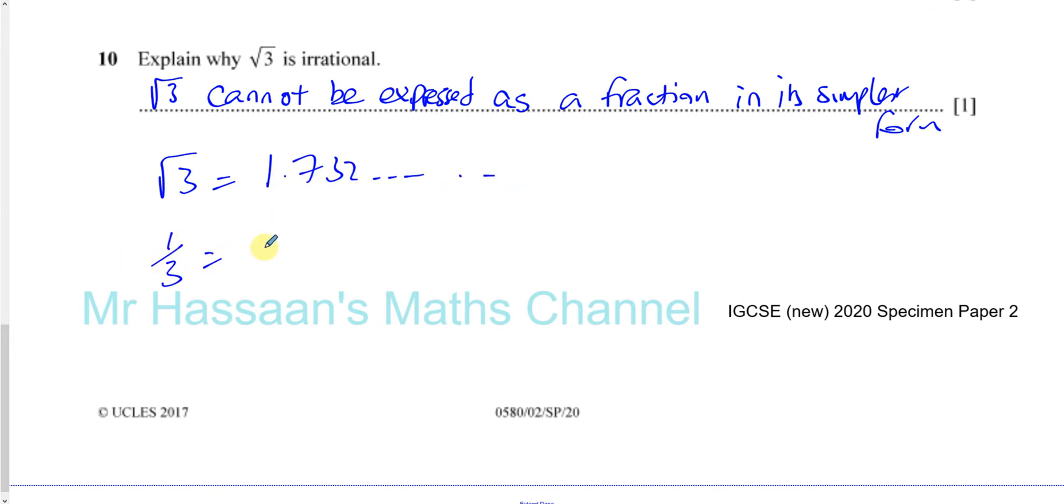So that's why it will have 1.732 and it will continue on. There won't be a pattern to it. Like if you have, for example, 1 third, that gives you 0.3 recurring. There's a pattern to it. It's just all 3s afterwards. Or if you have something like, say, 2 over 3, that gives you 0.6. There's a pattern to it.